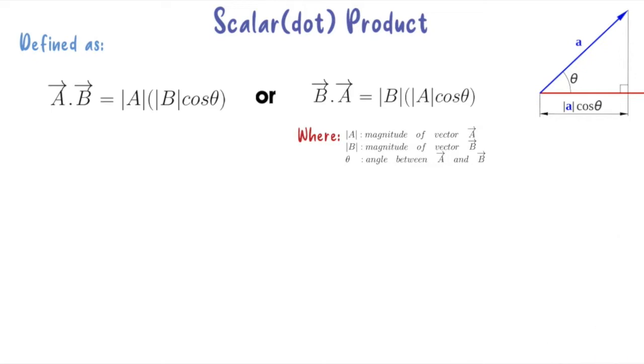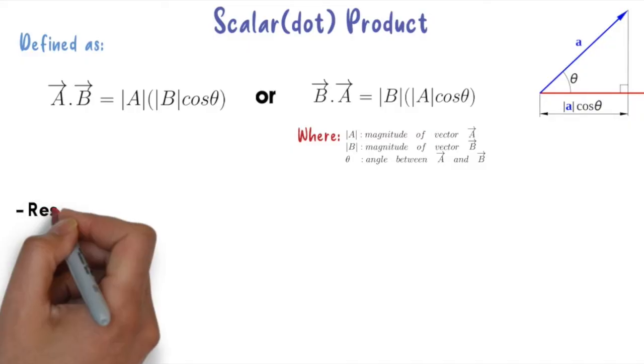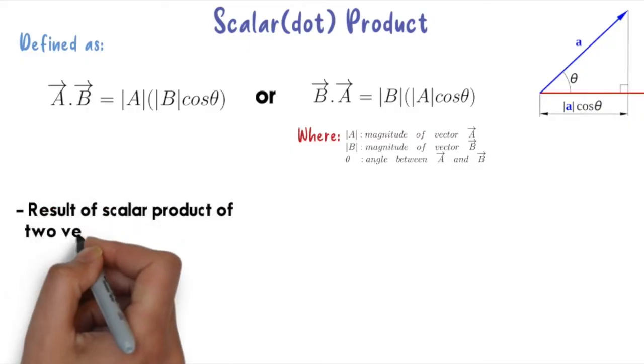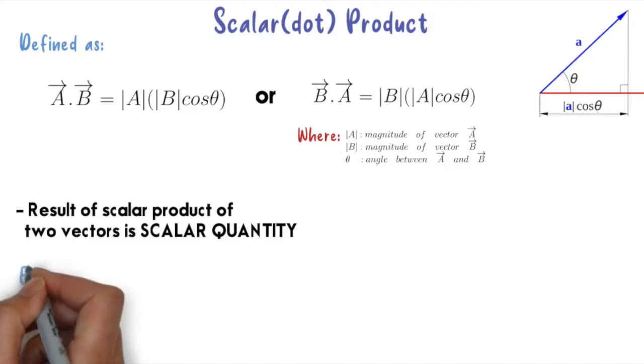So what does modulus A and B mean and what is the theta refer to? Modulus A refers to magnitude of vector A and modulus B refers to magnitude of vector B. And theta is the angle between A and B.